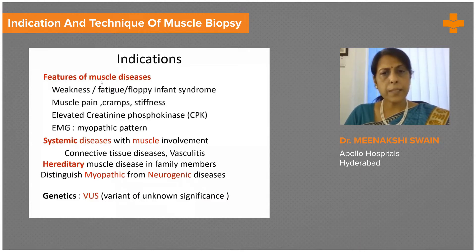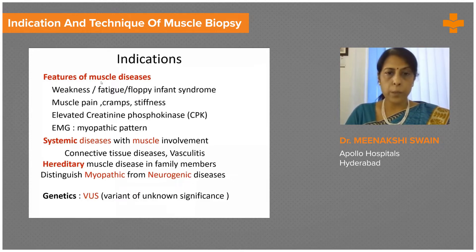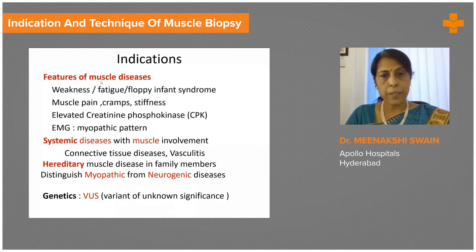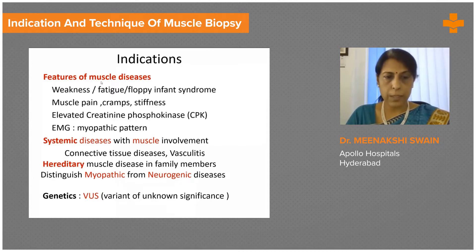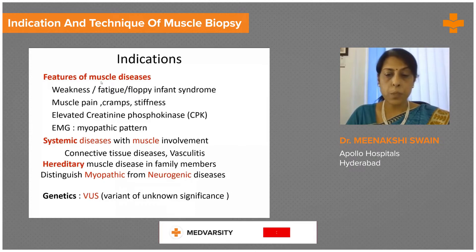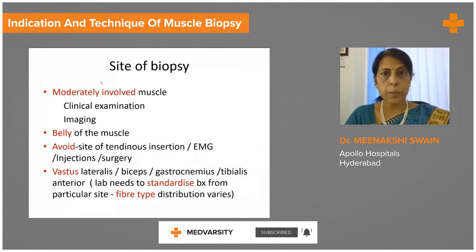Many systemic diseases have muscle involvement, like connective tissue diseases and vasculitis, and these would warrant a biopsy to confirm the diagnosis. Other indications would be when there is a hereditary muscle disease in family members, or when there's a requirement to distinguish myopathic from neurogenic diseases. In today's era of genetics, when genetics yields a diagnosis of a variant of unknown significance, a muscle biopsy would be indicated to find the diagnosis if possible.